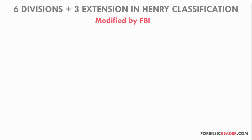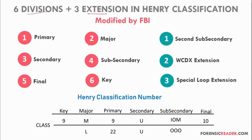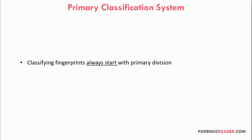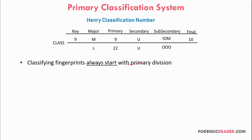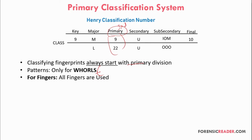Now moving to the six divisions and three extensions of the Henry fingerprint system. The primary classification is the first step — classifying fingerprints always starts with the primary division. In a Henry classification number, primary values are at the third position, but we always calculate primary first. Only whorl patterns are used, which is why primary classification is also called whorl classification. All 10 fingers are used, and specific numerical values are assigned for whorls, while arches and loops receive a value of zero.